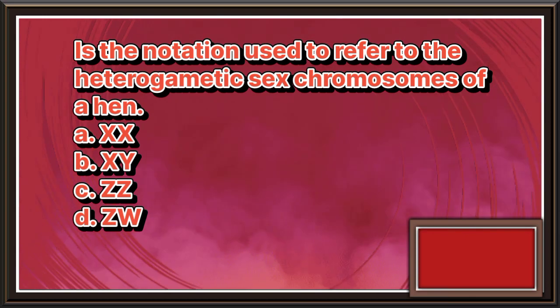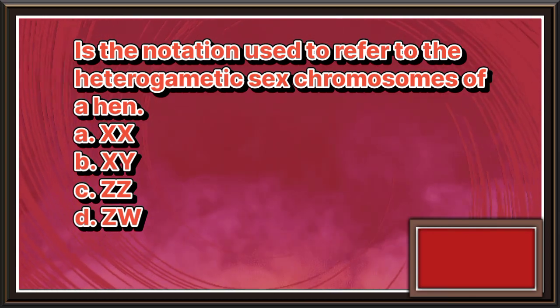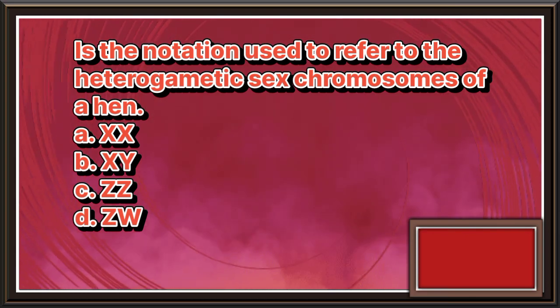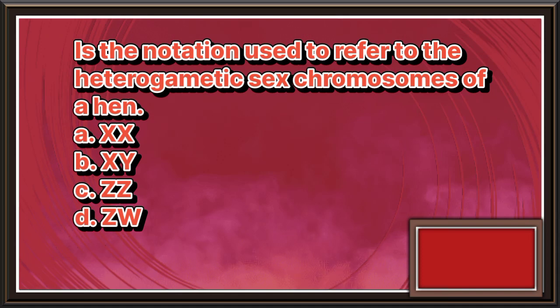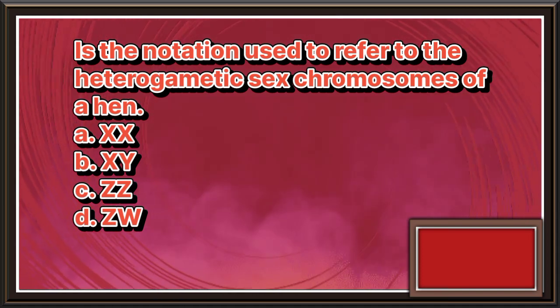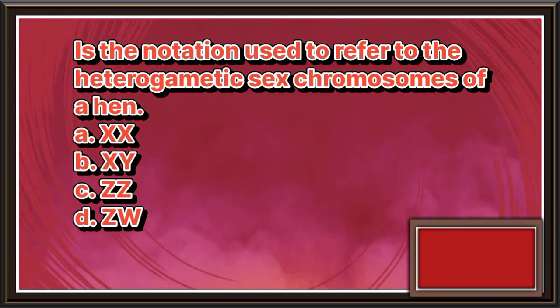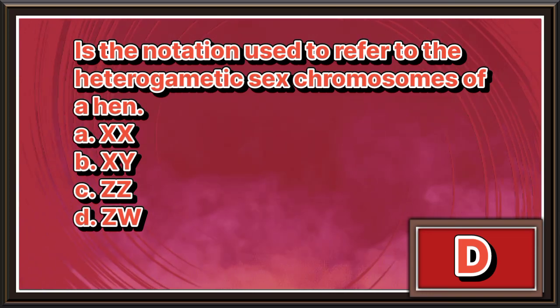What is the notation used to refer to the heterogametic sex chromosomes of a hen? a. XX. b. XY. c. ZZ. d. ZW. The answer is letter d.